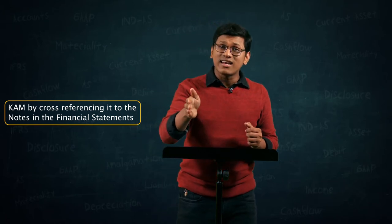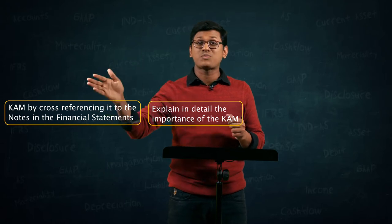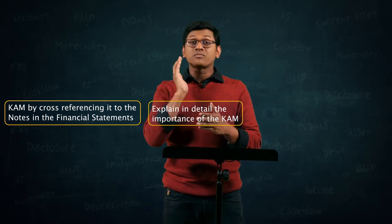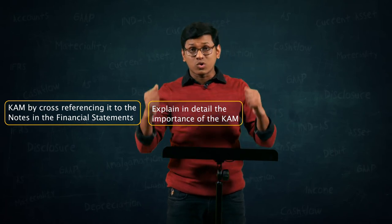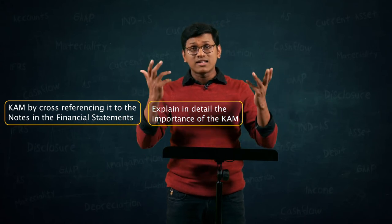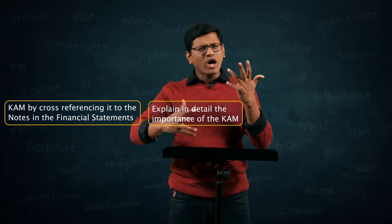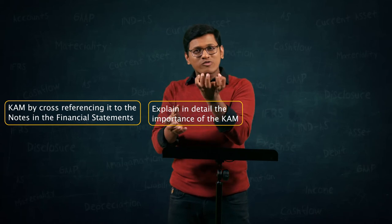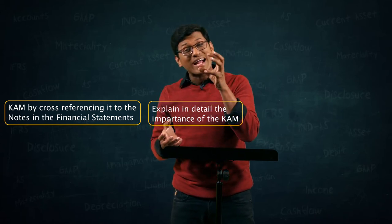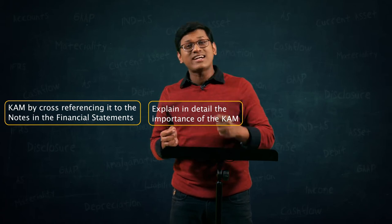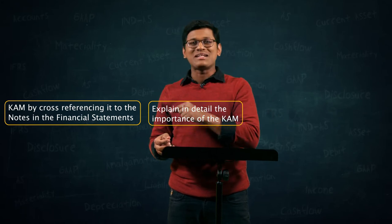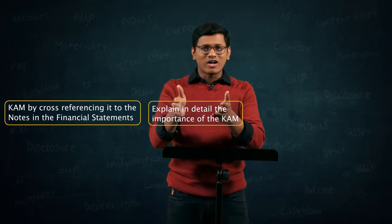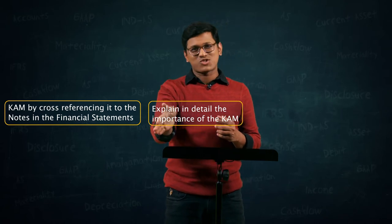Then you explain why it is critical — why you are calling it a key audit matter. For instance, if the company loses the case, it might have to pay 100 or 500 crores, which may even result in a going concern assumption being violated. Whatever you want to convey regarding the importance of that matter, you state it — because just like that you would not have elevated it to a super important point. You have to indicate the reason it is so important in the audit report.